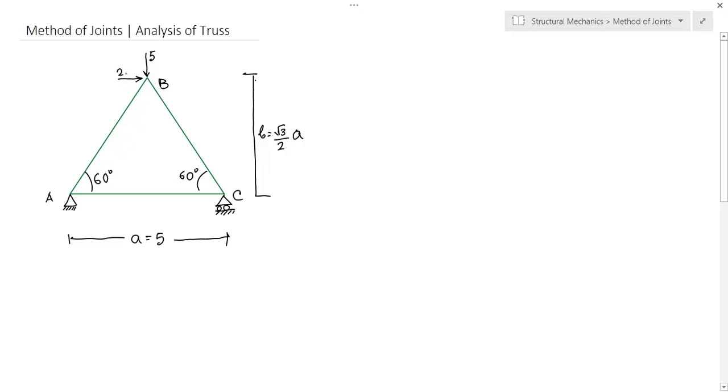This is our support A and support C. Support A is pin jointed and support C is roller. So for support A there will be two forces, one is the vertical and one is the horizontal direction. And in support C there will be only force in vertical direction.